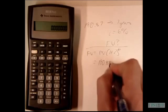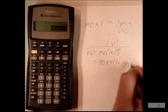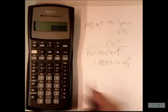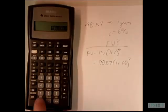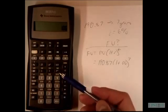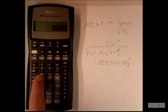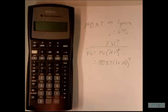We have 190.87 multiplied by 1 plus 0.06 to the seventh power. So we're going to have 1.06, and then we're going to use this exponent button - the y to the x - to the seventh power.